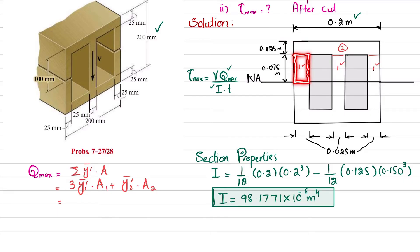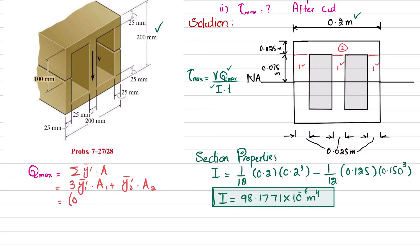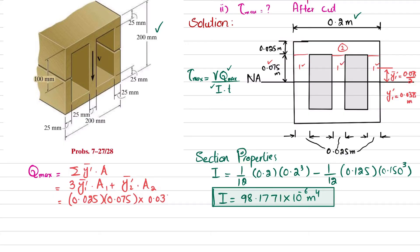For element 1: A₁ = 0.025 × 0.075 m². The centroidal distance ȳ₁ is from the neutral axis to the mid-height of element 1: ȳ₁ = 0.075/2 = 0.0375 m. We multiply by 3 because there are three such elements.